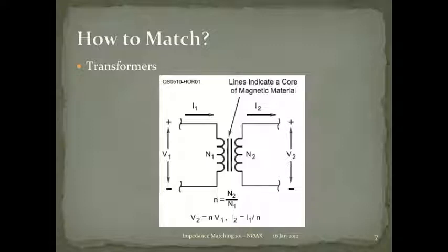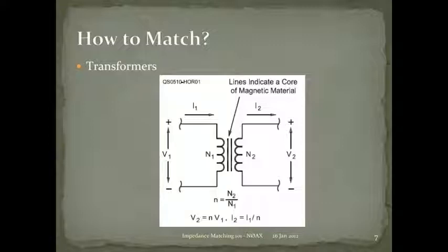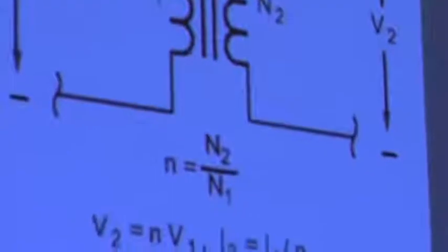Transformers are another matching method. A basic transformer takes power in as one combination of voltage and current and sends power out — minus a small handling charge — as another combination. Even a power transformer takes 120 volts at one amp from the grid and changes it to 12 volts at 10 amps on the other side. Same power, just a different ratio of voltage and current.